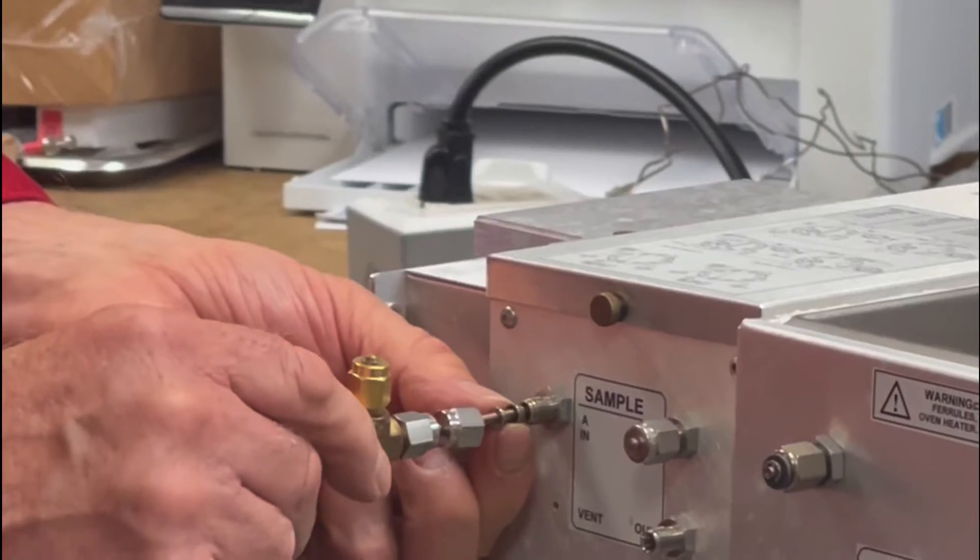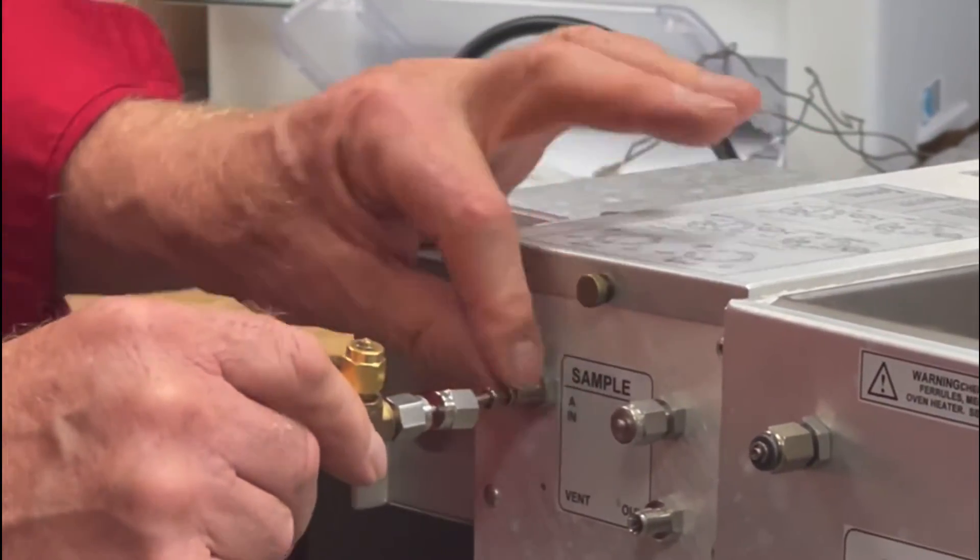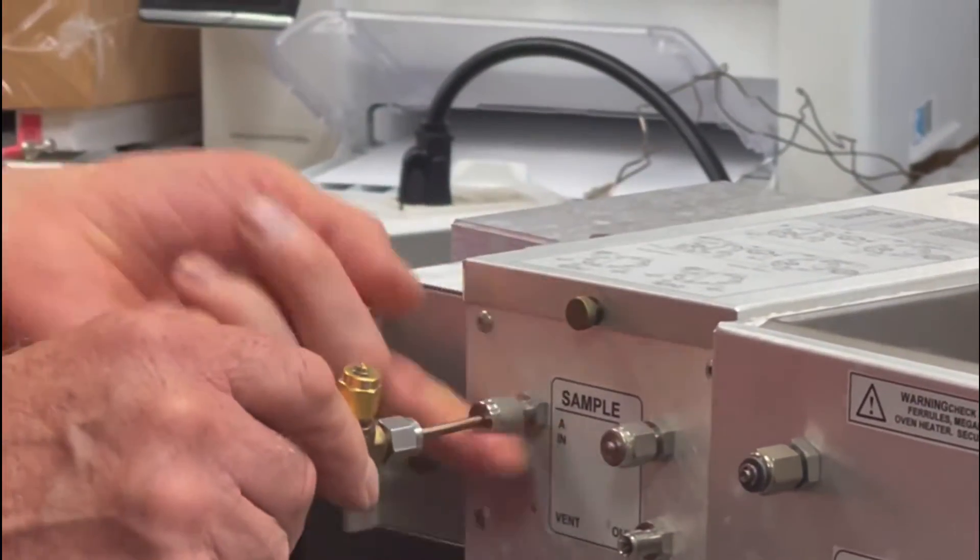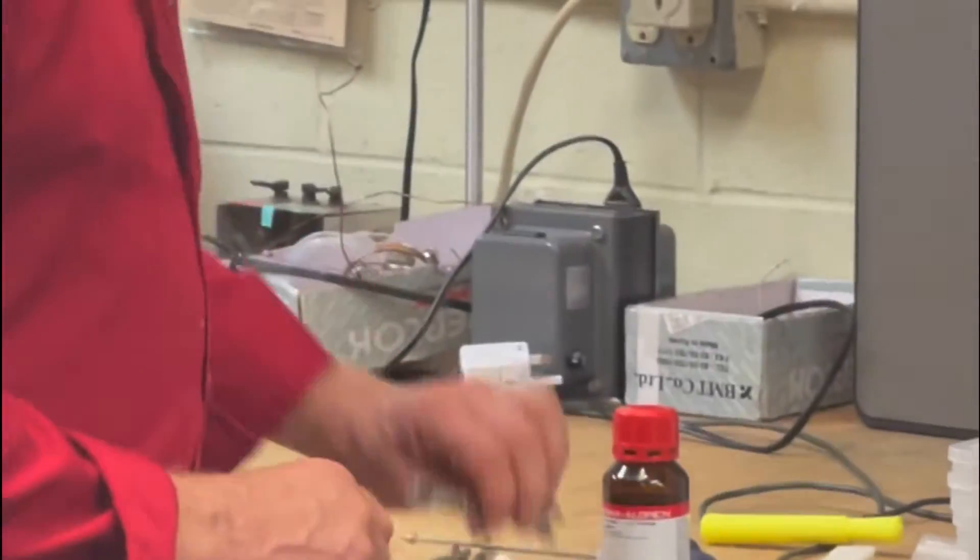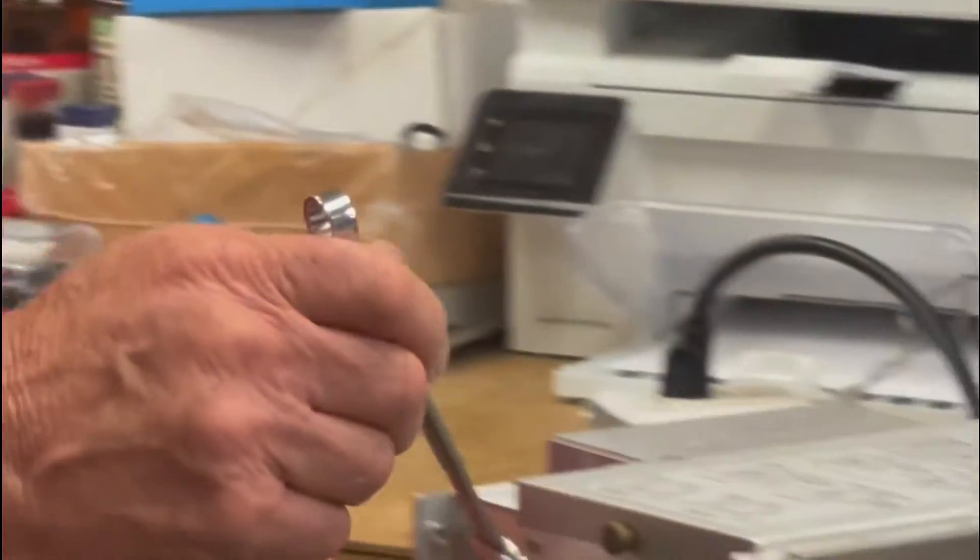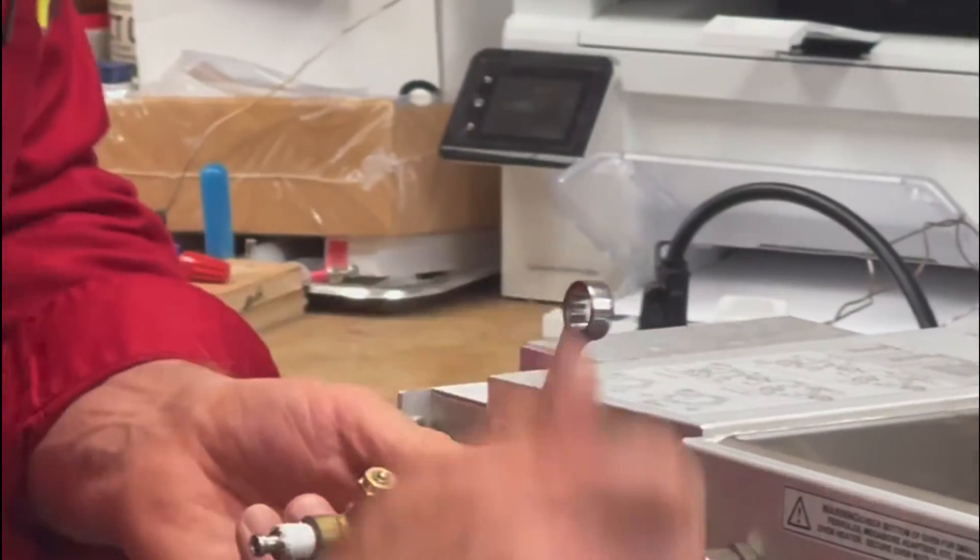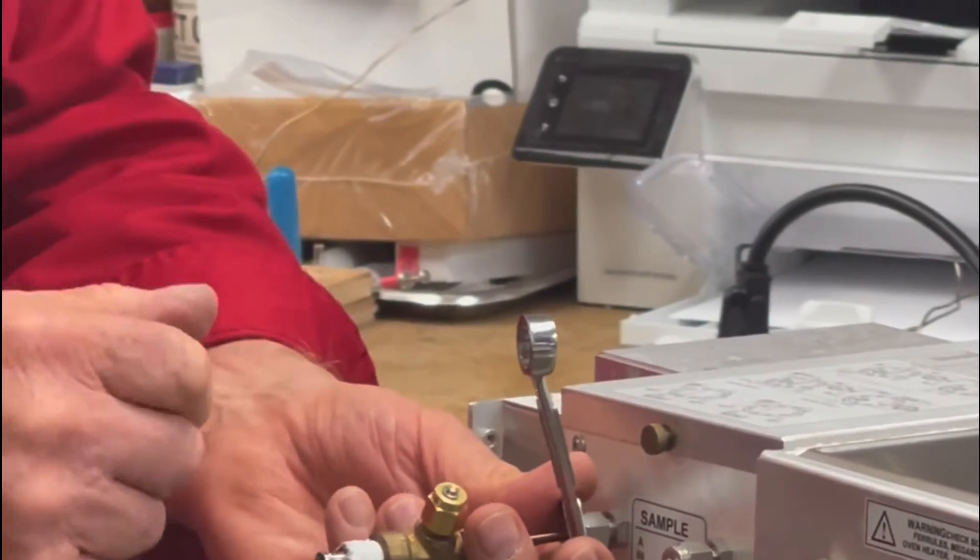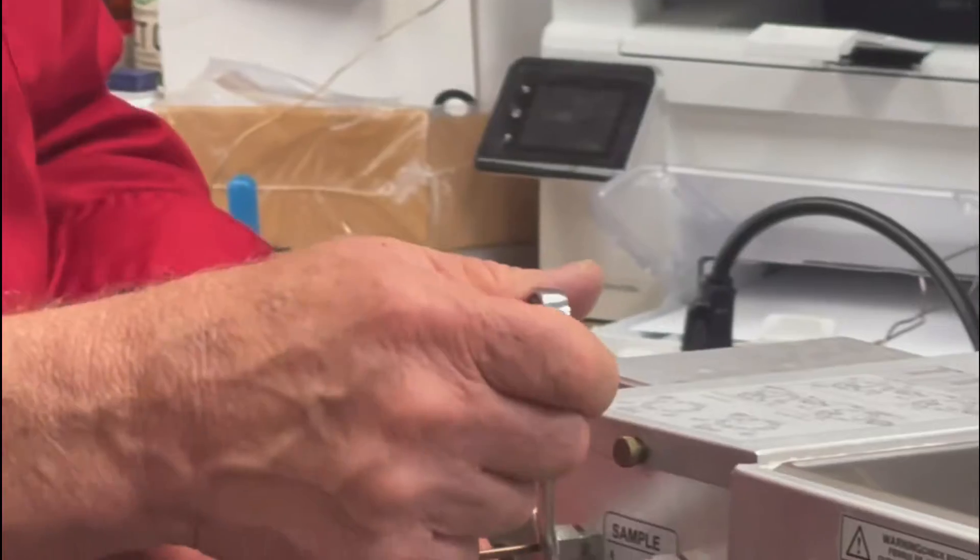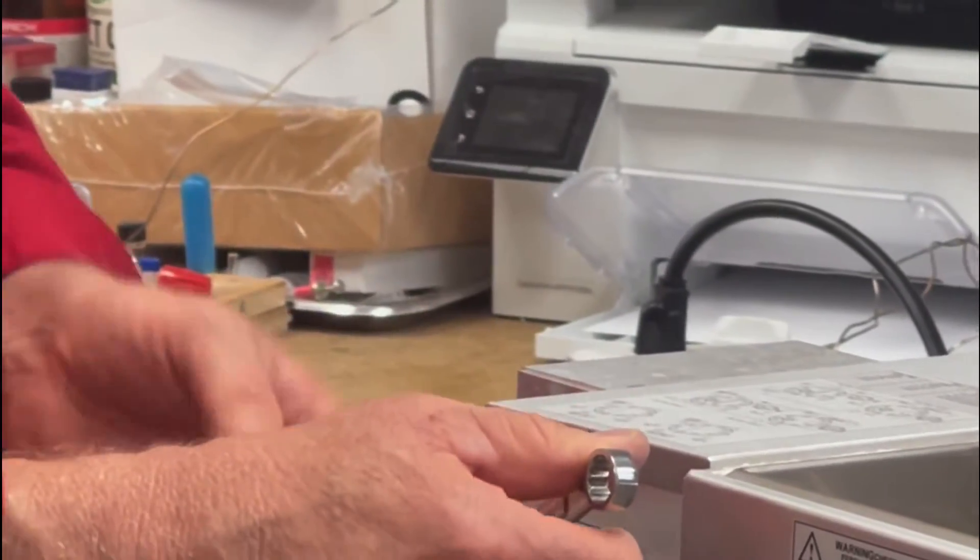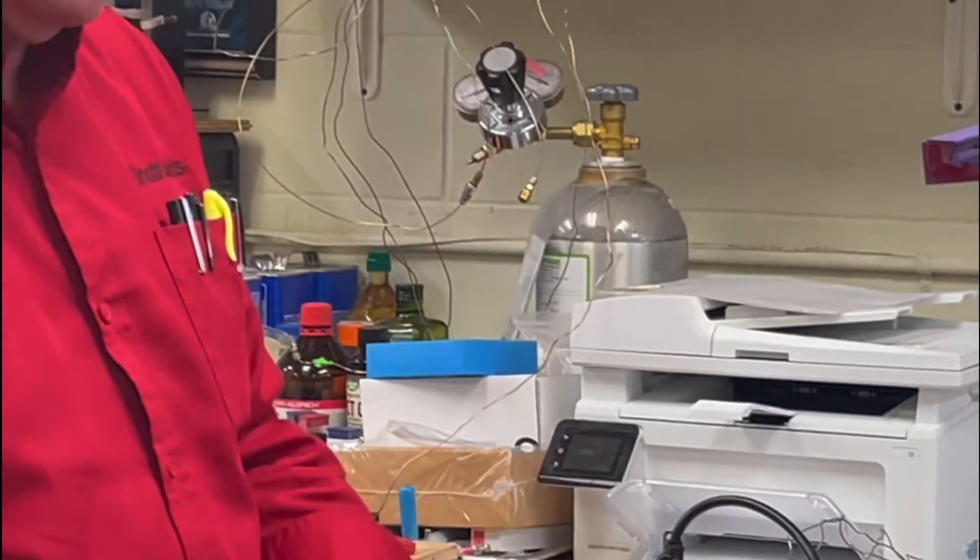The conical shaped ferrule gets squeezed into a conical shaped receptacle and then the nut tightens it down. When you tighten nuts like this you don't want to over tighten them. You want to tighten them to the point where you can feel a little bit of a squish but not keep going because that just distorts the fitting and it eventually breaks. It has to be tight enough but not so tight that you damage the fitting.